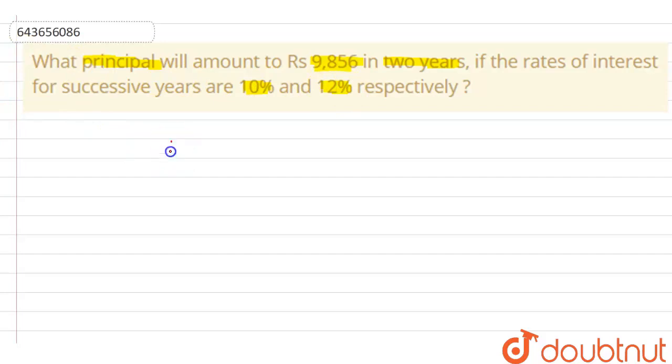So now let me write here. Let principal amount P equals to P. So here we are having amount A equals to 9,856. And here it is given that in two years, that means time is two years.